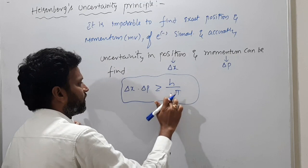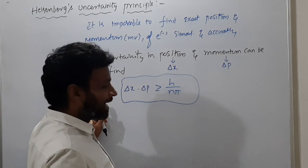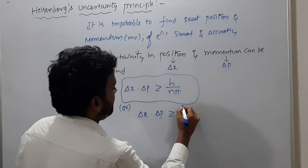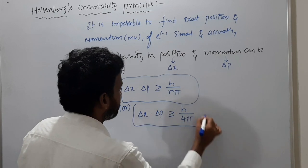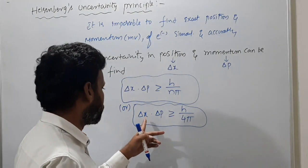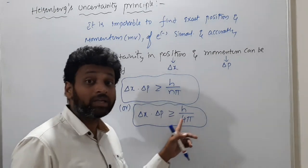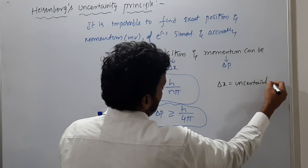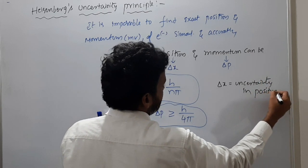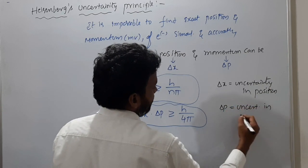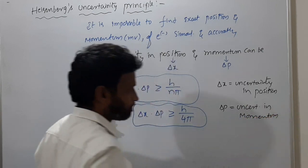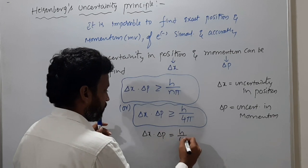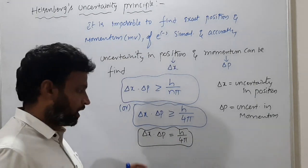Originally it was given as h/nπ, but later this uncertainty was found applicable up to the fourth orbit, so it was converted into the most important mathematical relation: delta X × delta P ≥ h/4π. For solving numericals, you can take delta X × delta P = h/4π. Here delta X is uncertainty in position and delta P is uncertainty in momentum.